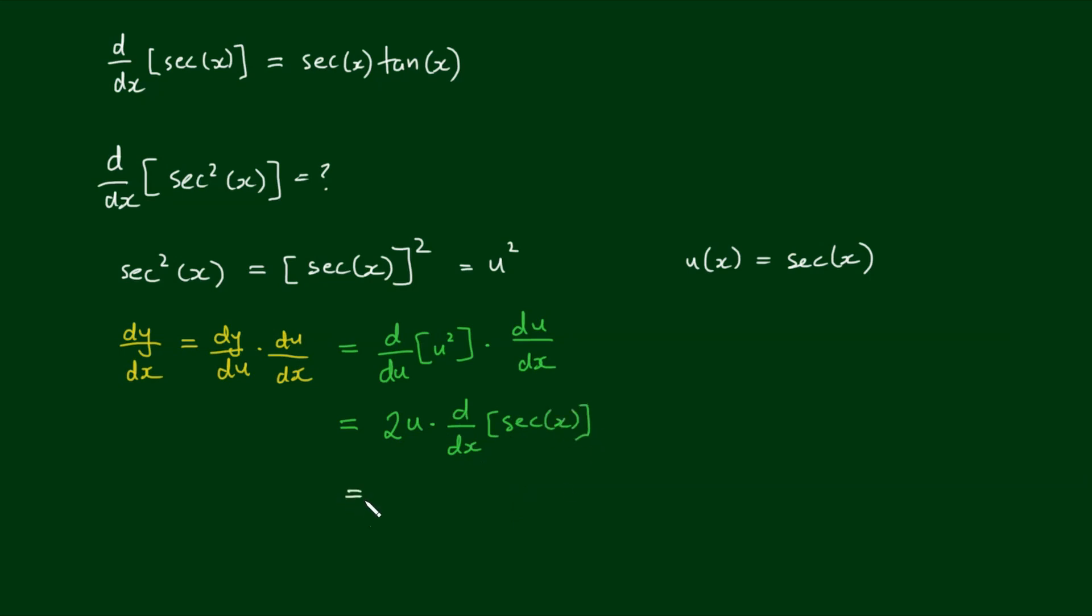With u(x) being equal to the secant of x, I get 2 times the secant of x by the derivative of the secant of x. Here's this guy up here. So I have the secant of x by the tan of x.